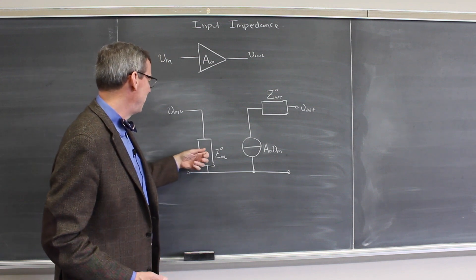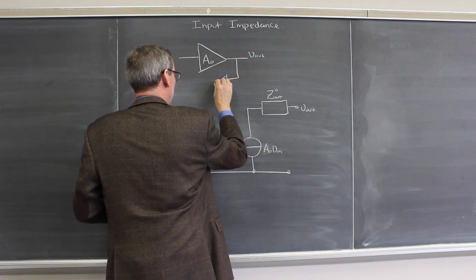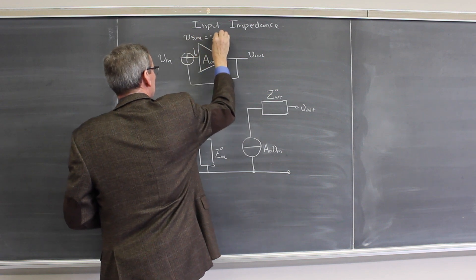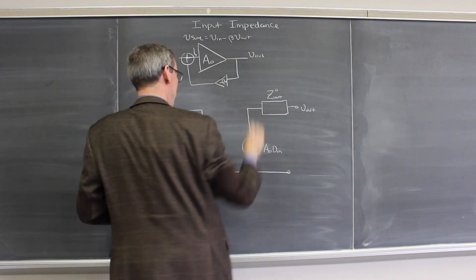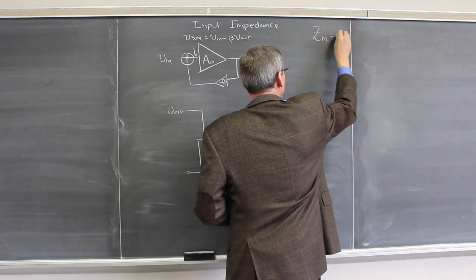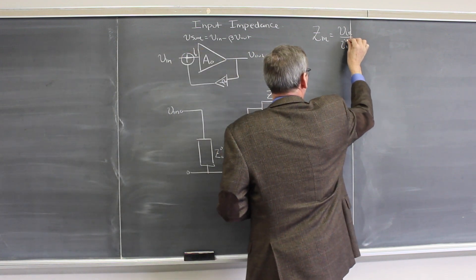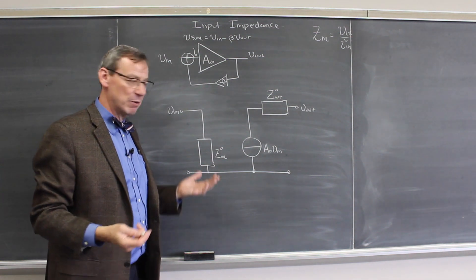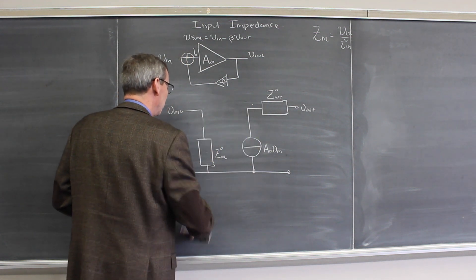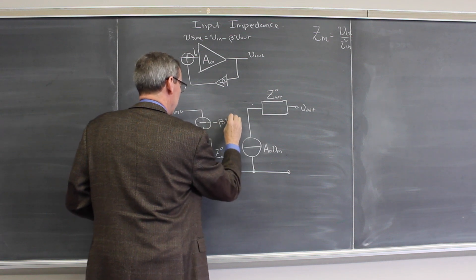The question we'd like to ask today is: what happens to this input impedance when we apply negative feedback? When we essentially take some fraction beta and add it back into the input. So there is this Vsum equals Vn minus beta·Vout. Feedback means we take some fraction of this and put it back in here — it's like putting a little voltage source here, which is minus beta·Vout.